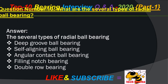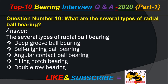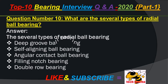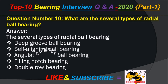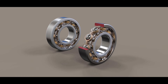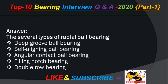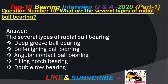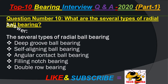Question number 10: What are the several types of radial ball bearings? Answer: The several types of radial ball bearings are: deep groove ball bearing, self-aligning ball bearing, angular contact ball bearing, filling notch bearing, and double row bearing.